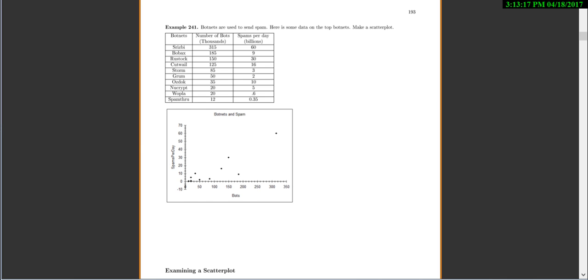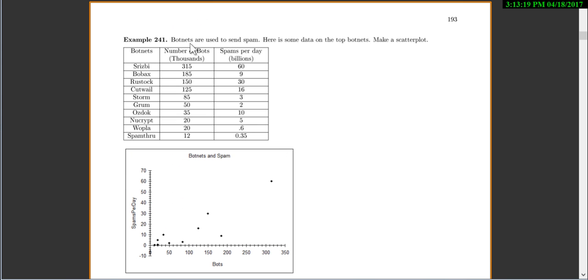Let's zoom out here and look at a few examples. So in this first one, we have botnets are used to send spam. Here's some data on the top botnets. So you can see on these botnets, it tells you the number of bots and then the number of spams per day they can send out. And you can see the scatter plot. So this point right here had about 150 bots and about 30-ish spam. That must be this one right here, rest stock. 150 bots, 30 spams.